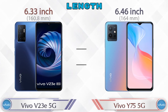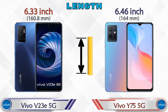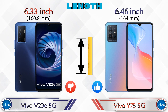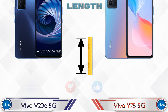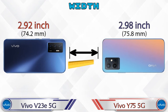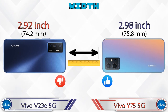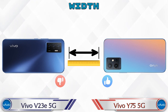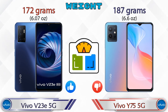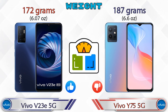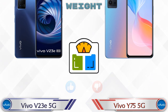Talking about the dimensions: the V23e 5G has a length of 6.33 inches and the Y75 5G is 6.46 inches. Width: V23e 5G is 2.92 inches and Y75 5G is 2.98 inches. Talking about weight, the V23e 5G is 172 grams and the Y75 5G is 187 grams, making it heavier than the V23e 5G.